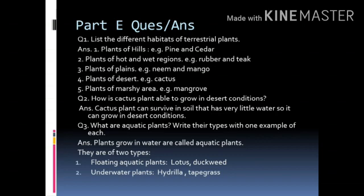Question number 2. How is the cactus plant able to grow in desert conditions? Answer: the cactus plant can survive in soil that has very little water, so it can grow in desert conditions.